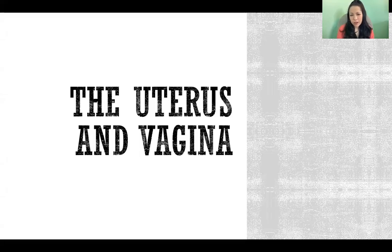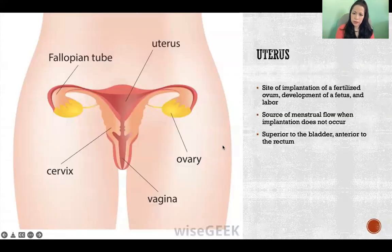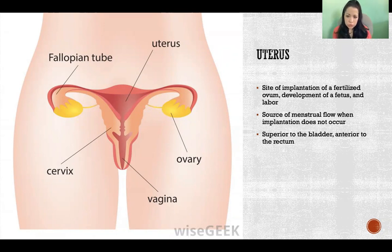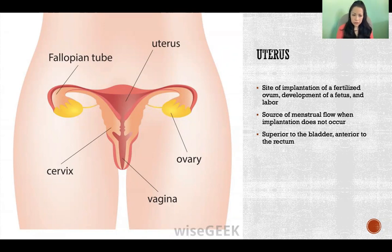Hello. In this video, I'm going to talk about anatomy and physiology of the uterus and vagina. The uterus is the site of implantation of a fertilized ovum, development of a fetus, and labor. It's also the source of menstrual flow if implantation does not occur. It's located superior to the urinary bladder and anterior to the rectum.